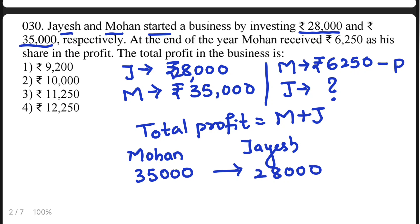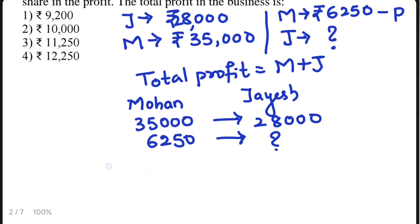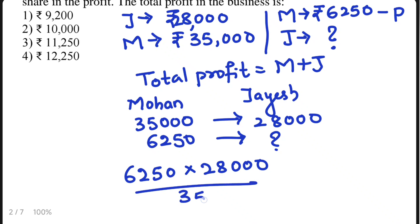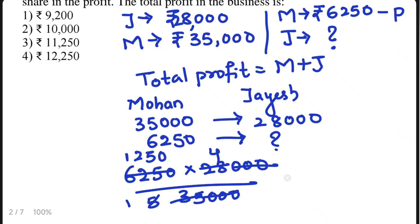Since Mohan got 6,250 rupees as his profit share, Jayesh's share would be: 6,250 multiplied by 28,000, whole divided by 35,000. The thousands cancel, giving 6,250 × 28 / 35, and simplifying further gives Jayesh's profit as rupees 5,000.